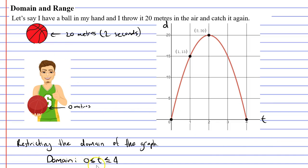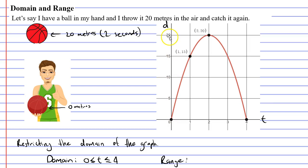You may have noticed that when we picked our values for the domain we picked those values from the horizontal axis. What about the vertical axis? Well that's where the range comes into play. The range for this graph — looking at the vertical axis, our graph only exists between values of 0 through to 20. So our range would be values of d such that d is greater than or equal to 0 and less than or equal to 20.